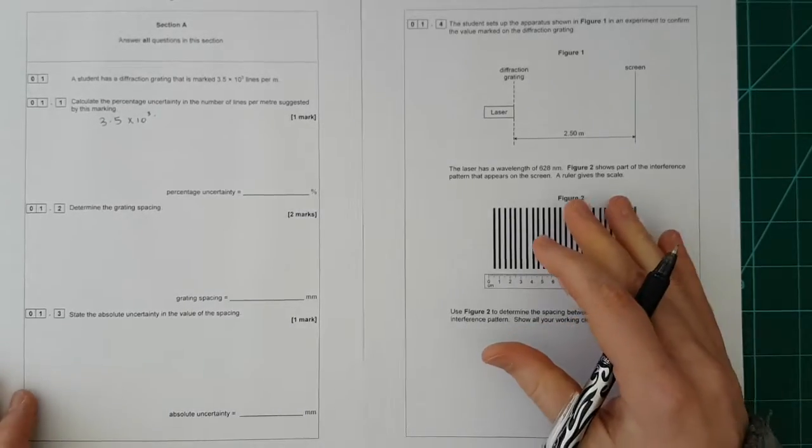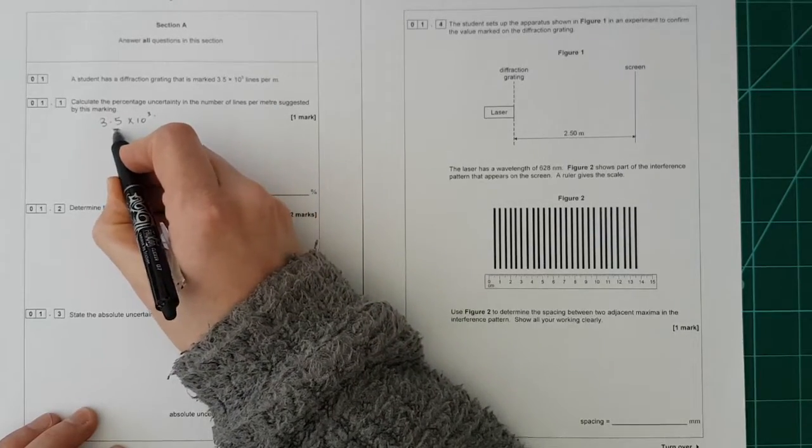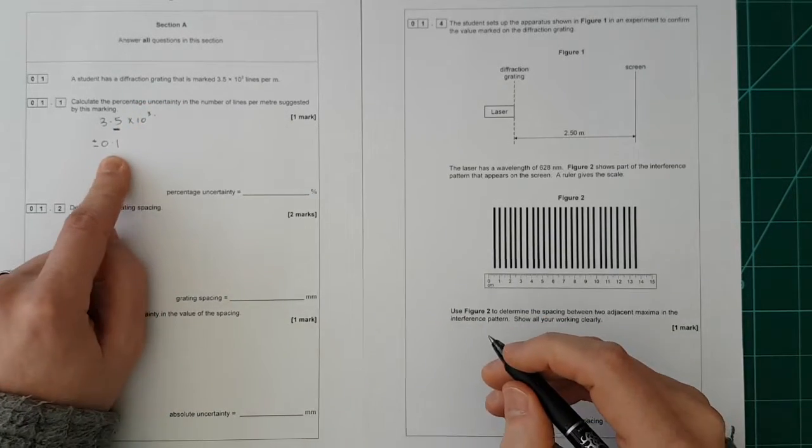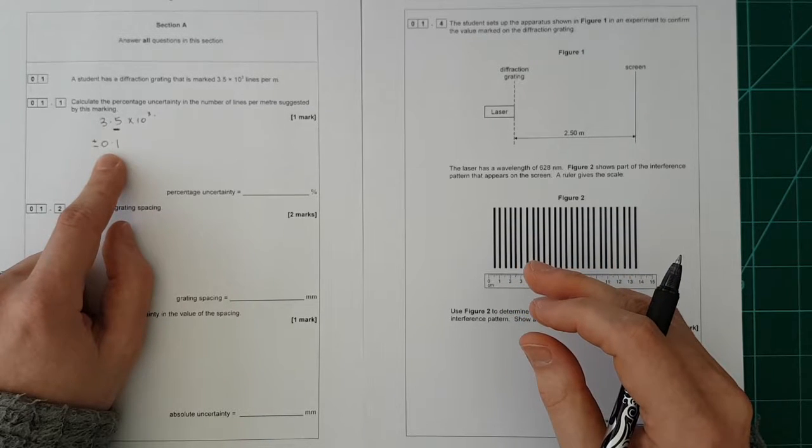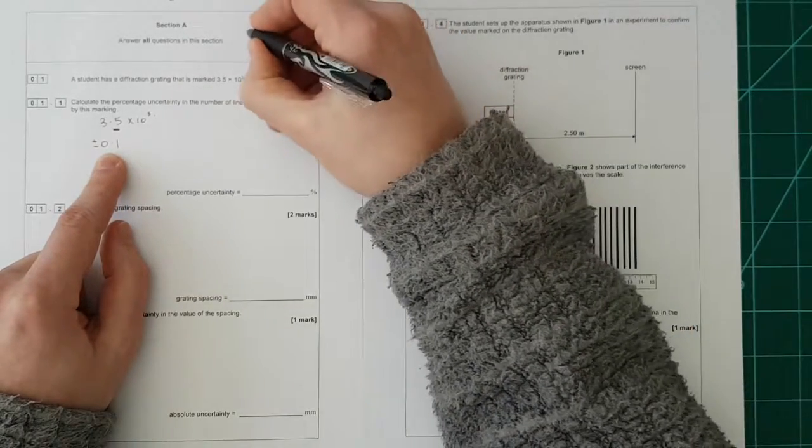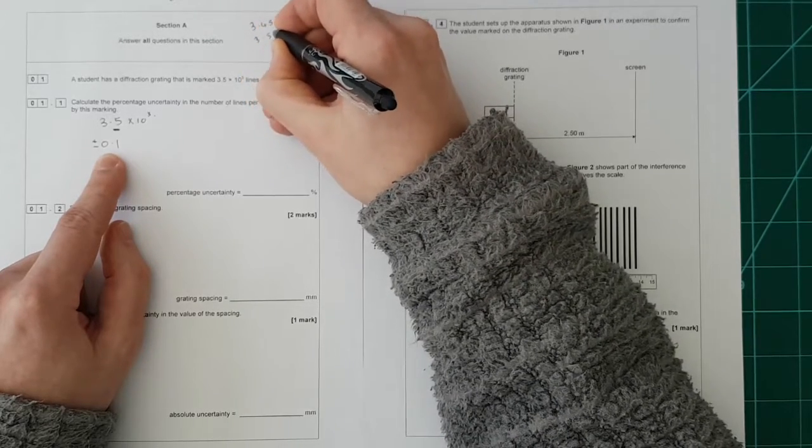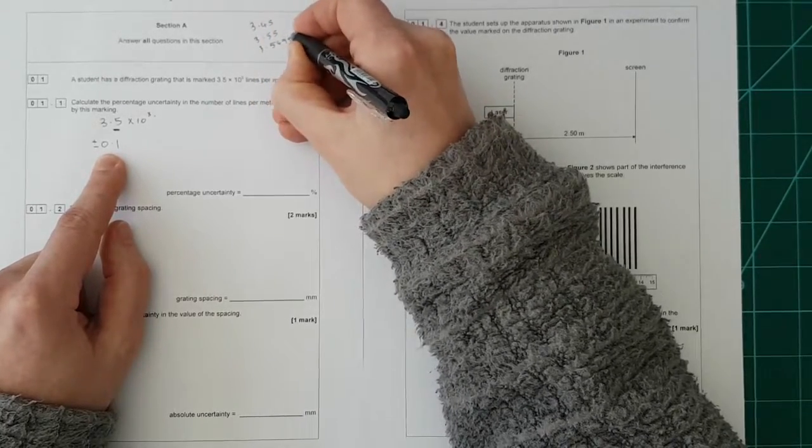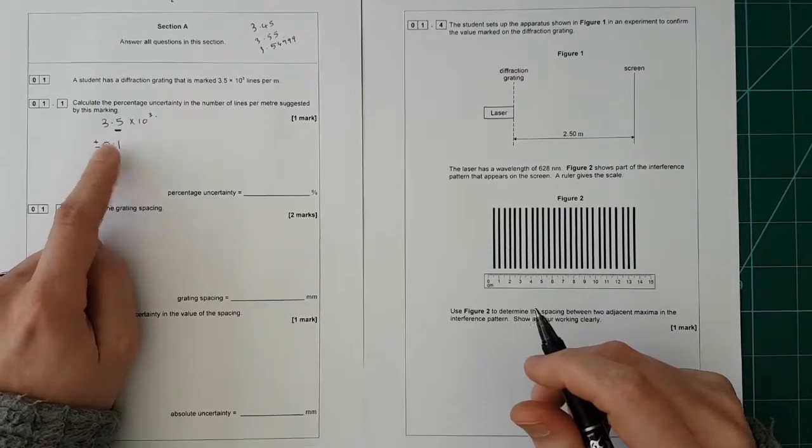So we have 3.5 times 10 to the 3. Now the way AQA have decided is that the uncertainty in this is the smallest decimal place there, so it's going to be plus or minus 0.1. Now this is a little bit confusing to some students because, quite rightly, it's different to what you learn in GCSE. In GCSE you would learn that it would be as low as 3.45 and as high as 3.55. This is different but you have to learn the way that AQA wants it and this is the way they want it.